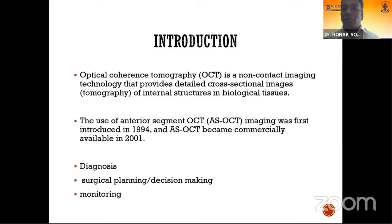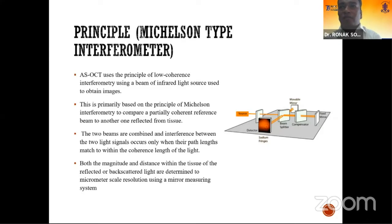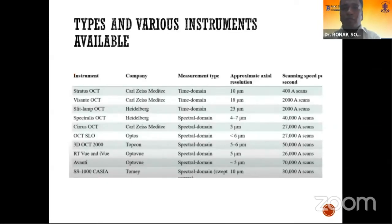It helps in diagnosis, surgical planning, and decision-making along with monitoring of treatment. Based on the Michelson's interferometer, the principle is to compare a partially coherent reference beam to another one from a reflected tissue. These are the various machines available — some are time domain; as time has passed, we have shifted to spectral domains, and there are swept-source OCTs in the form of Cassia available, which is the latest device.